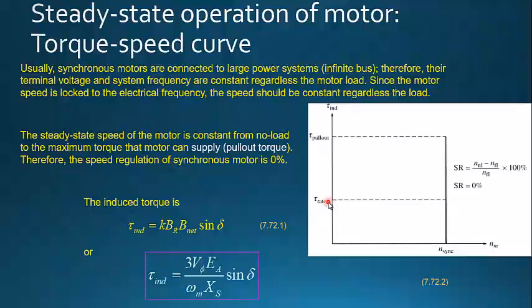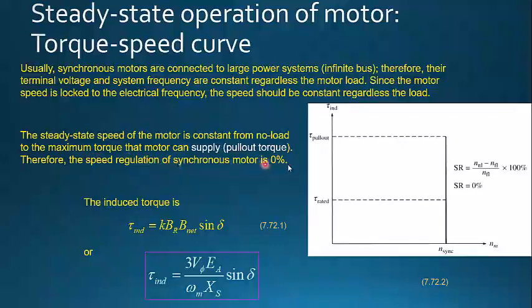So the steady-state speed of the motor is constant from no load to the maximum torque the motor can supply. The pullout torque is typically about three times the rated torque — so if the rated capacity is five people, the pullout would be around fifteen. Since the speed never changes from no-load speed to full-load speed, the speed regulation of the motor is zero. Speed regulation equals no-load speed minus full-load speed, divided by full-load speed, times one hundred. Since there is no change in speed, the speed regulation is zero.